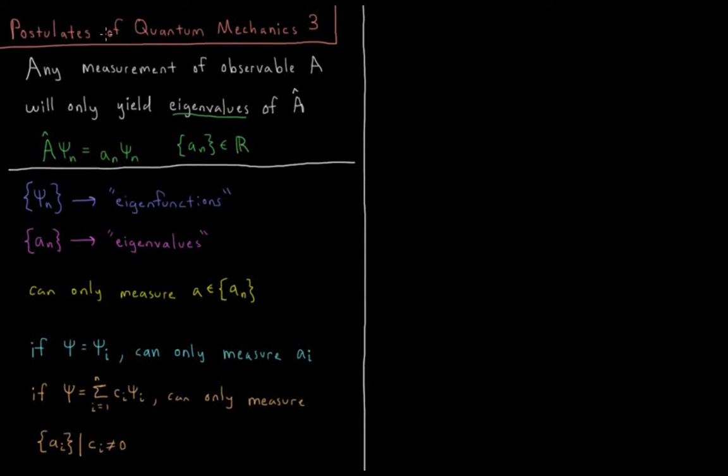The third postulate of quantum mechanics is that any measurement of an observable property A will only yield eigenvalues of the quantum mechanical operator for A.